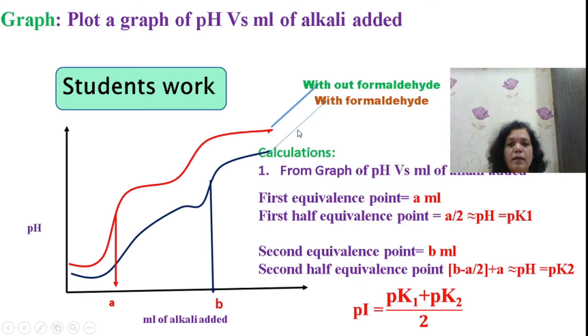The second dissociation constant you can find from the second titration with formaldehyde. Find the value of 'b'. Calculate (b minus a) divided by 2, plus a. The corresponding pH value will give you pK2. Substitute these values in the equation to find pI, the isoelectric point: pI equals (pK1 plus pK2) divided by 2.